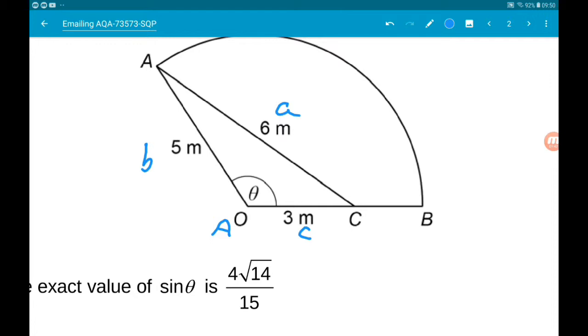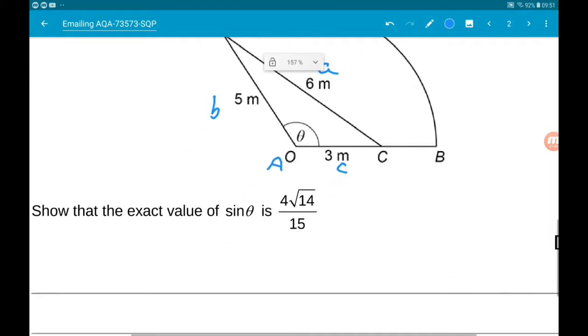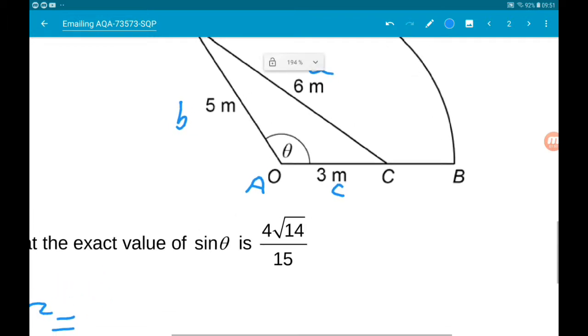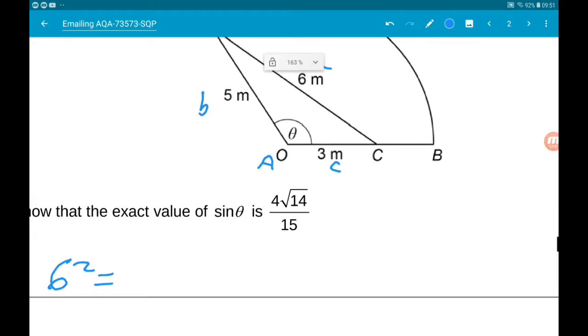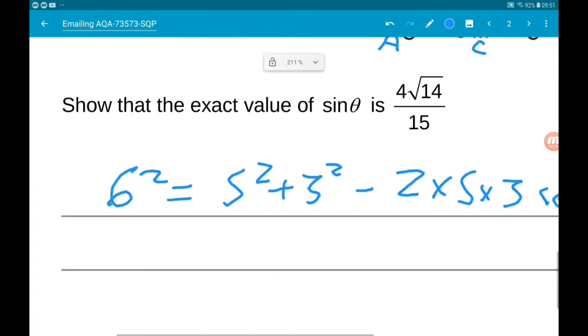A squared is B squared plus C squared minus 2BC cos of A. So 6 squared is equal to 5 squared and 3 squared minus 2 times 5 times 3 cos of A. So 36.